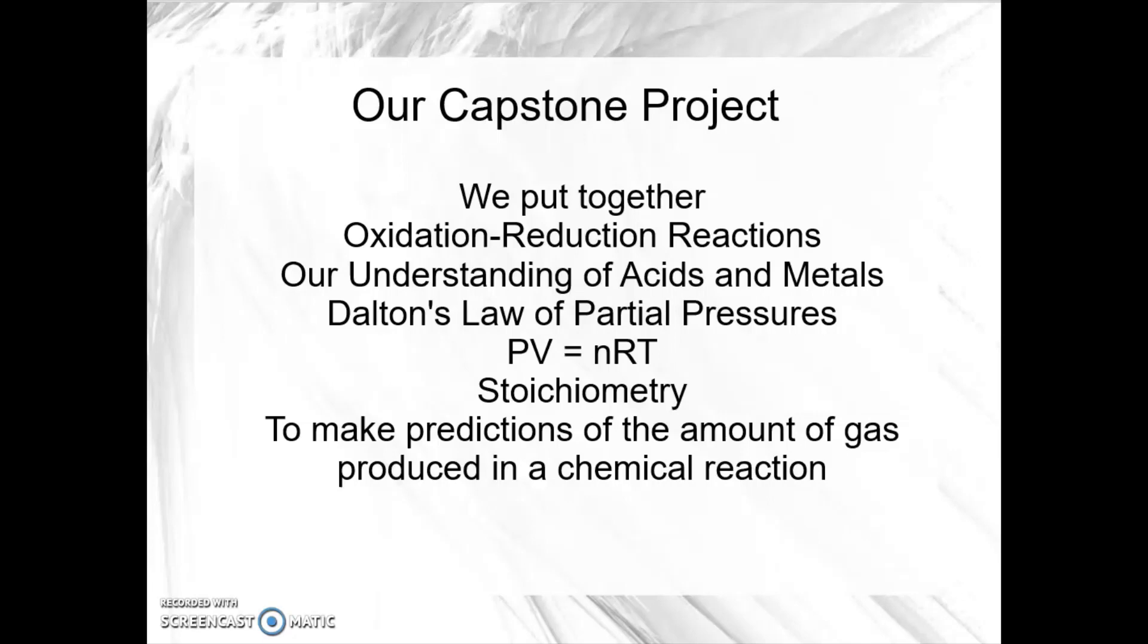We have to look at an oxidation reduction reaction using an acid and a metal to generate a gas. That means it's going to involve stoichiometry because we want to predict the amount of gas that we're going to make. But predicting the amount of gas means we're actually going to be predicting the volume of the gas produced because it's very difficult to get the mass of a gas. And that means we will need the ideal gas law, PV=nRT, and we'll end up needing Dalton's law of partial pressures because of the way that we're collecting the gas.